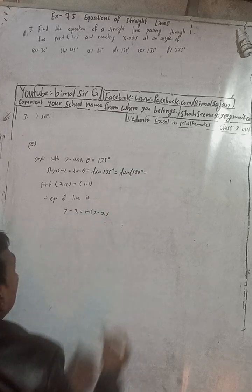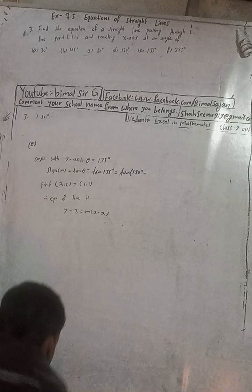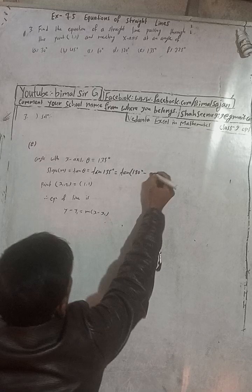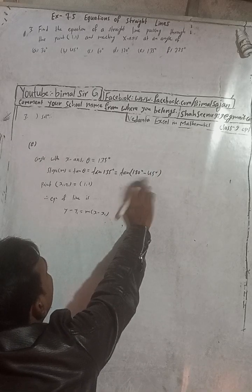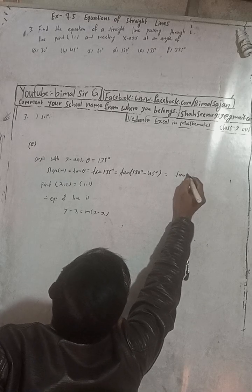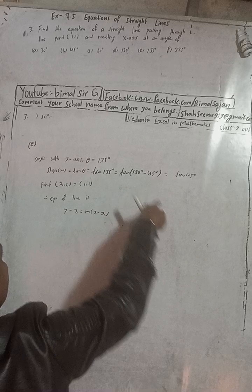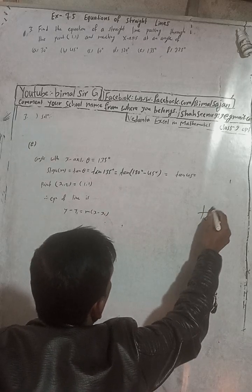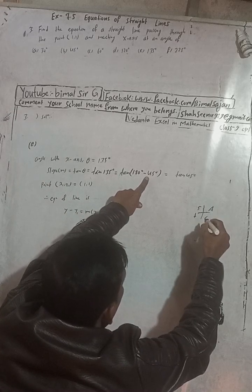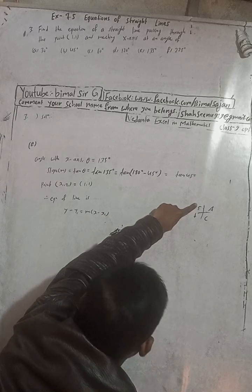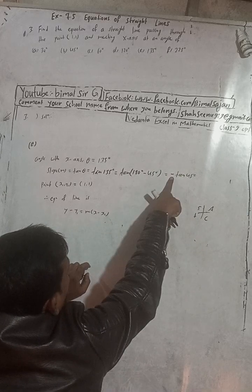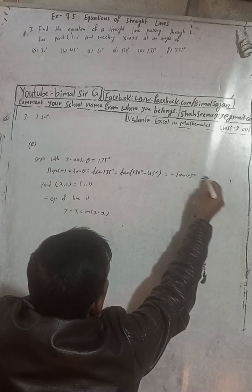135 degrees can be written as 180 minus 45 degrees. Using the CAST rule, this is in the second quadrant where tangent is negative. So tan 135 equals minus tan 45 equals minus 1. Therefore slope m equals minus 1.